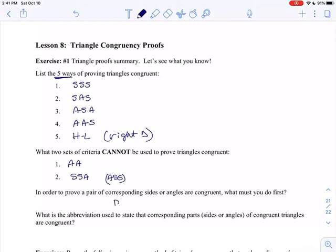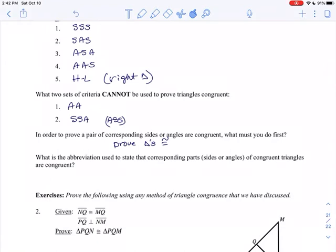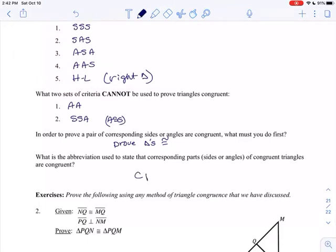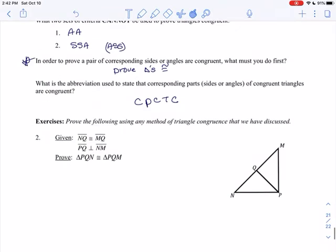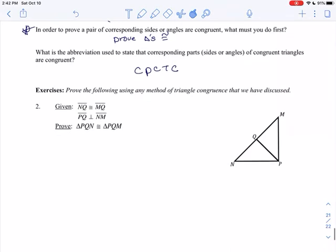In order to prove a pair of corresponding sides or angles are congruent, what do you have to do first? Well, you have to prove the triangles are congruent. So if you're ever asked to prove sides or angles, first you're proving the triangles are congruent, and then the corresponding sides or angles are congruent.